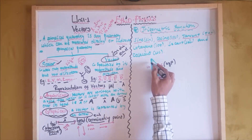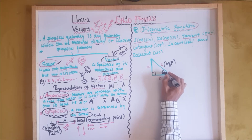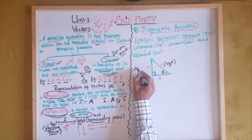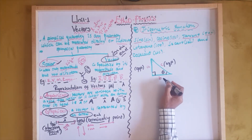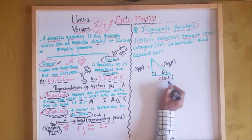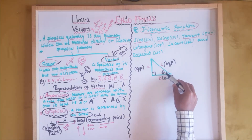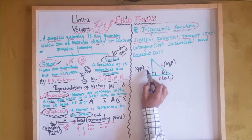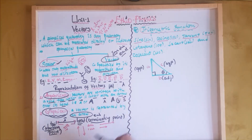The side opposite to the angle theta is called the opposite side. The adjacent side is the side that makes the given angle theta together with the hypotenuse side. Depending on our angle of consideration, the opposite and adjacent sides change accordingly.